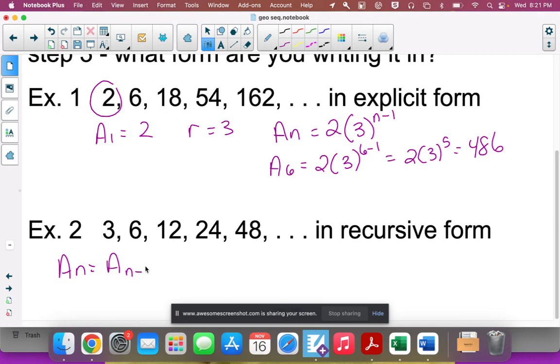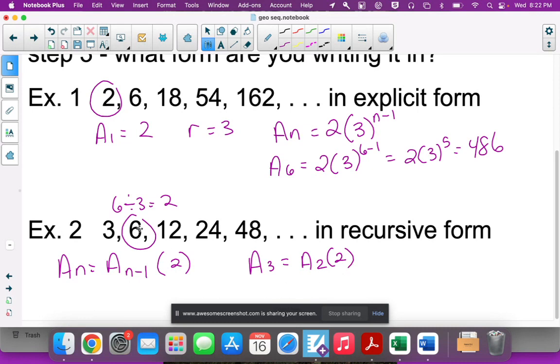Recursive form looks like this - all you're doing is writing down what your common ratio is. You don't even need your first term for this; you just need the r. So 6 divided by 3 is 2 - there's your recursive form. In recursive form, if I want the third term, I need the second term and multiply it by 2.